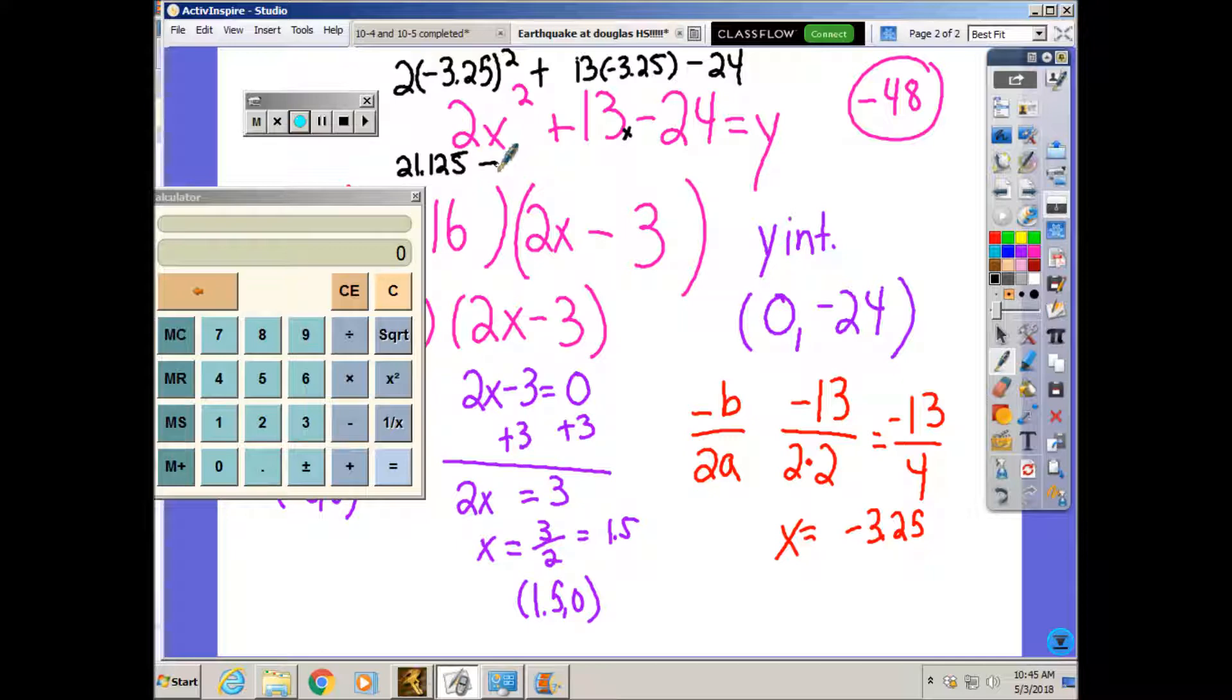So 13 times 3.25 is negative 42.25. Minus 24.